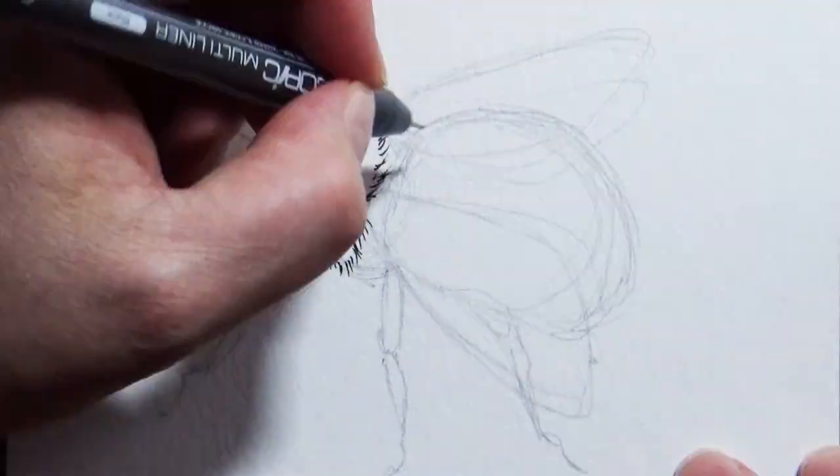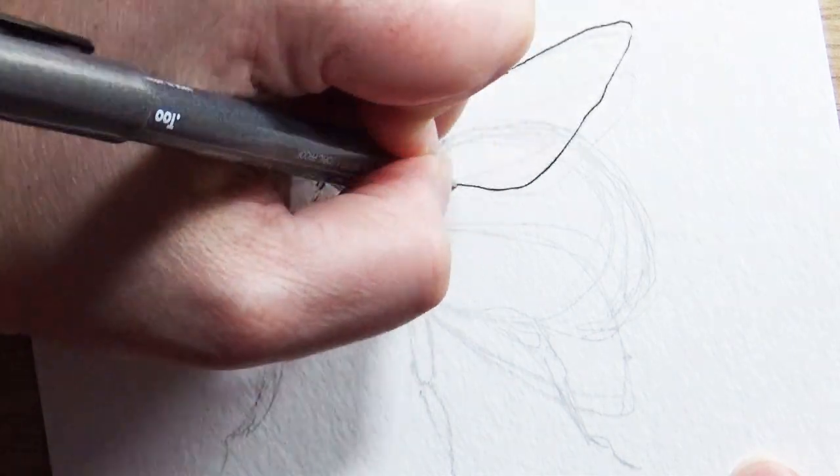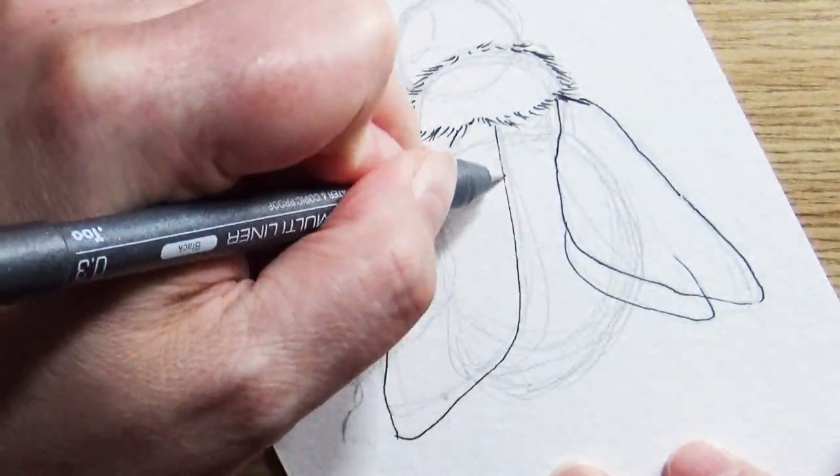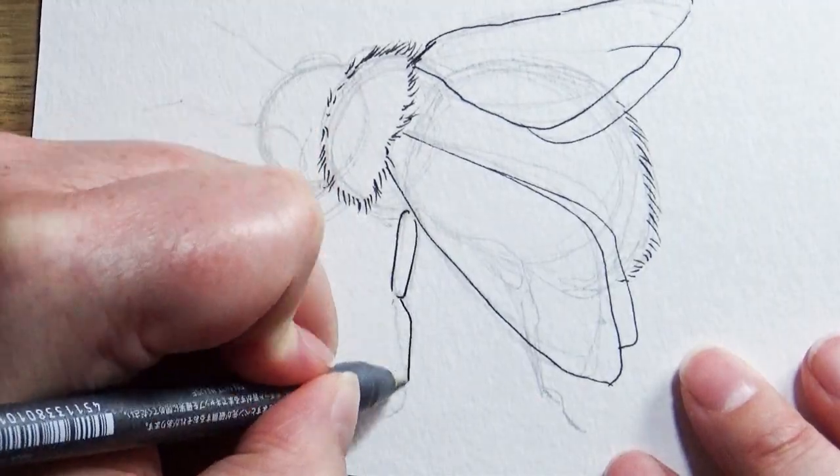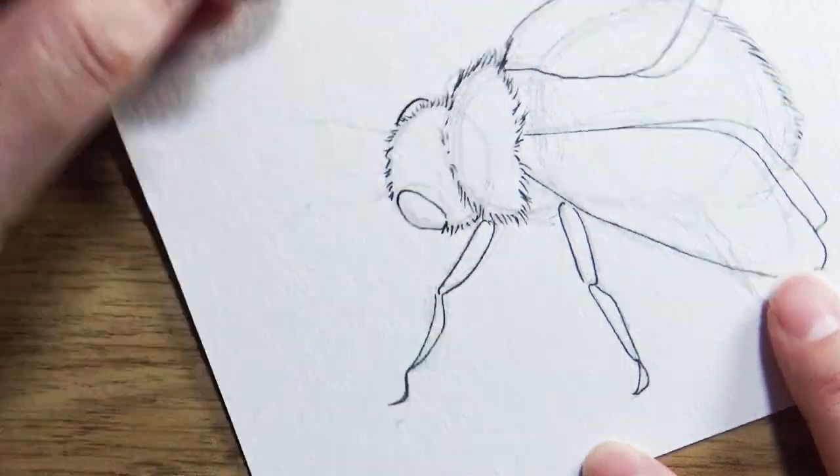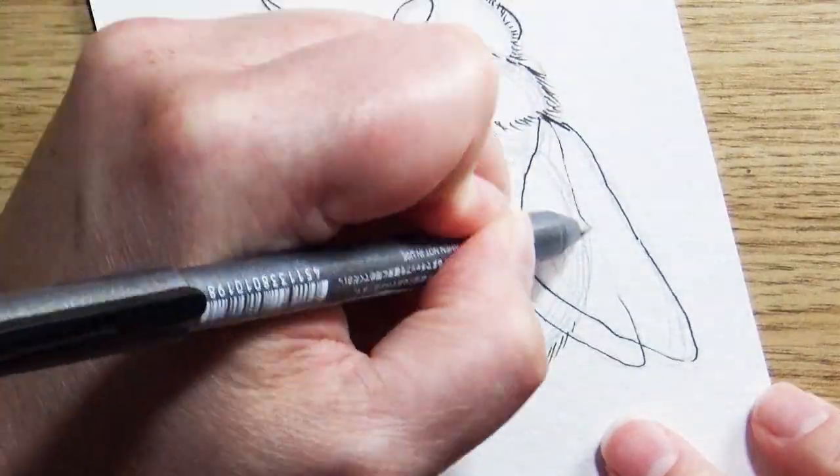I'm starting off with a watercolor postcard that I got at my local art store. The ink pen I'm using is a Copic Multiliner, and these are great because they're water resistant. So I can put markers or water over top of that.